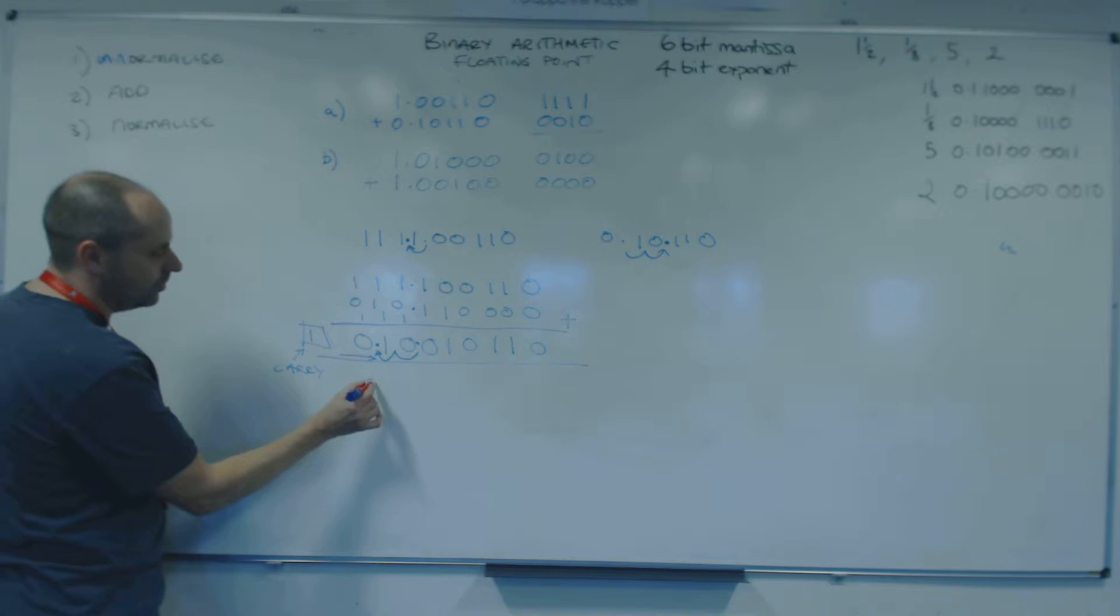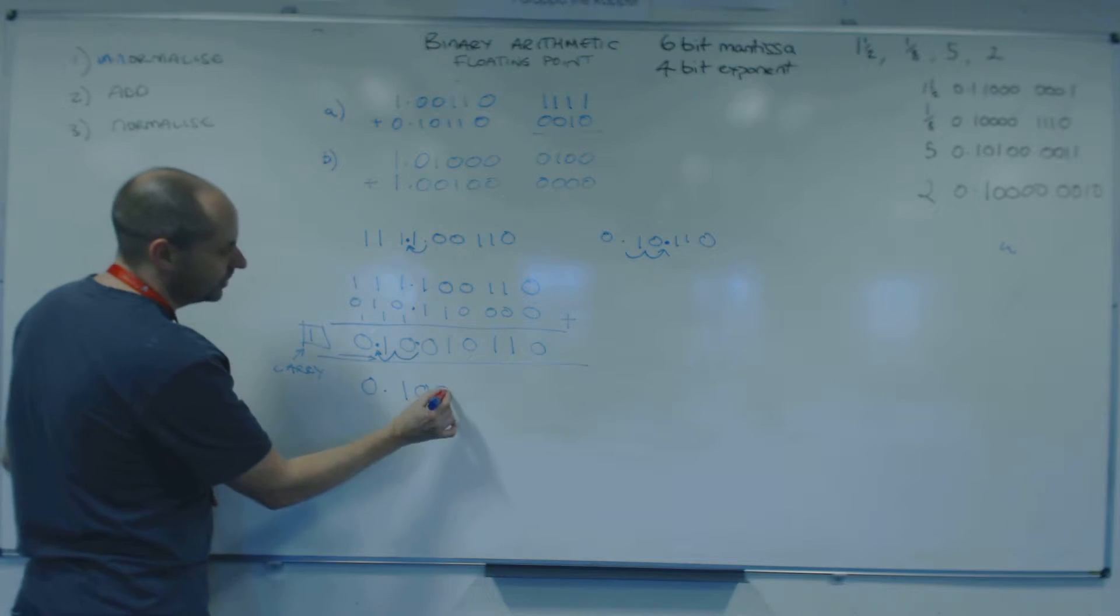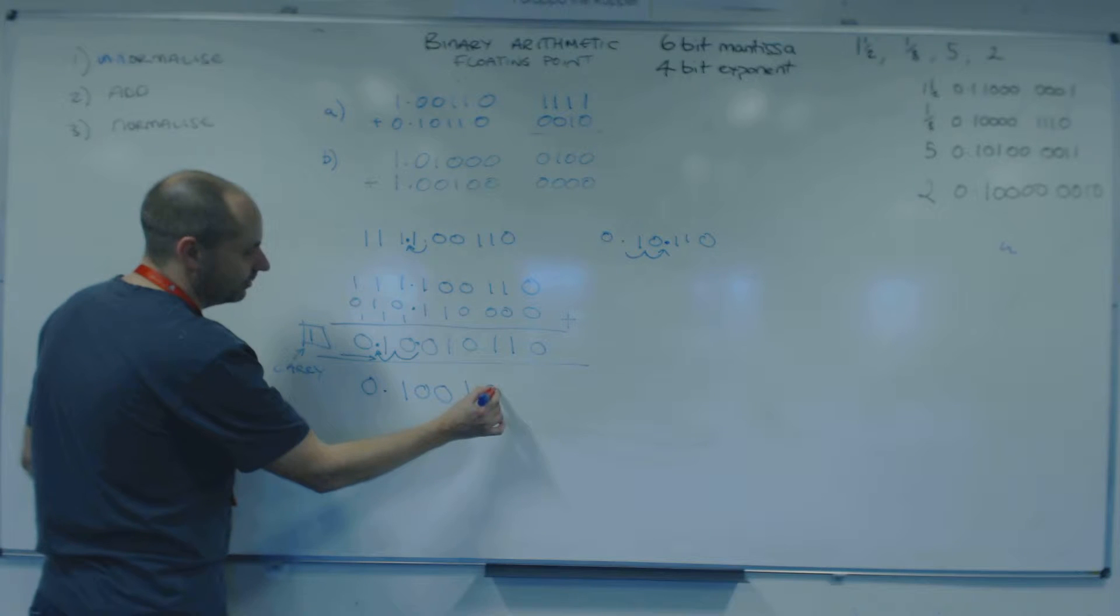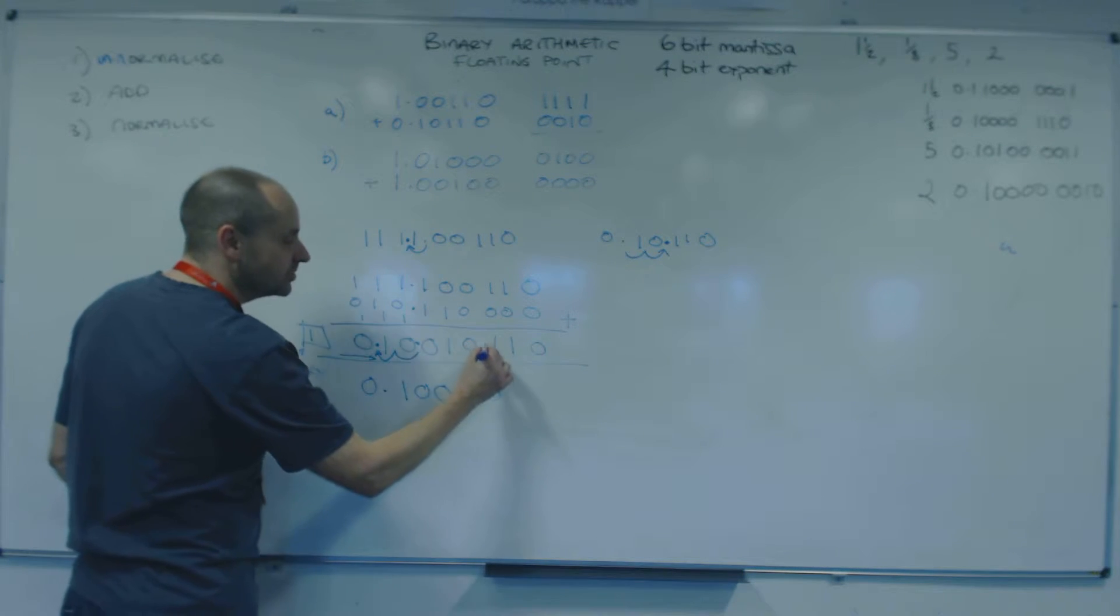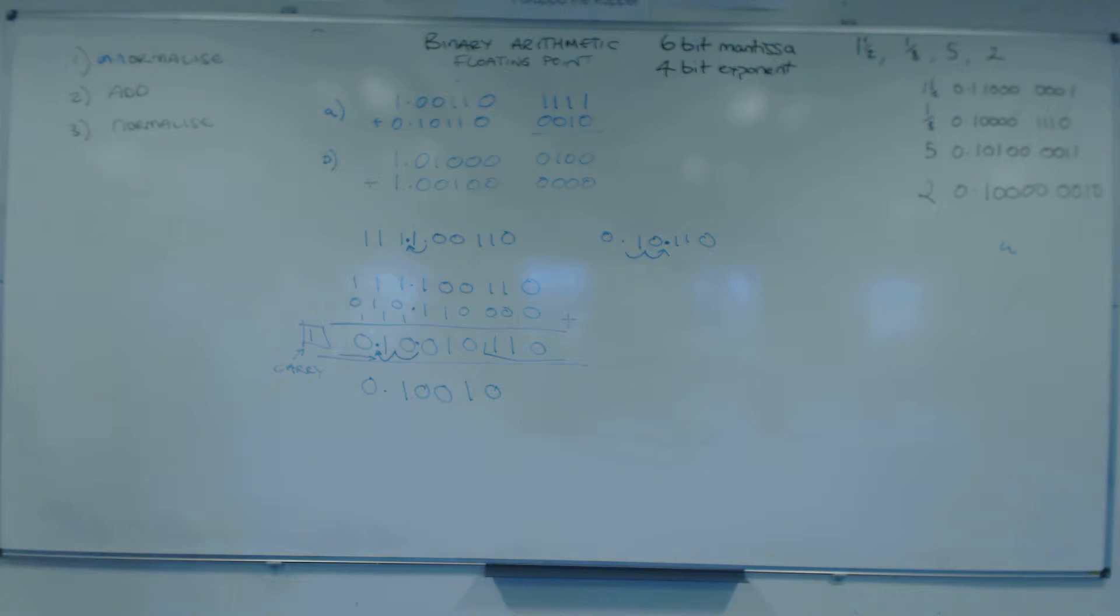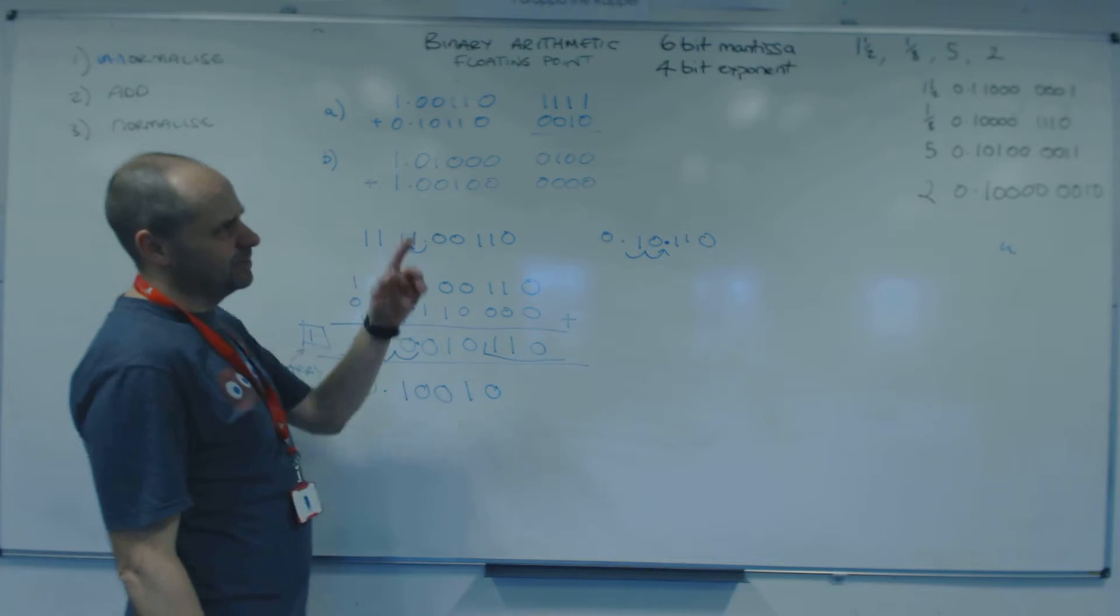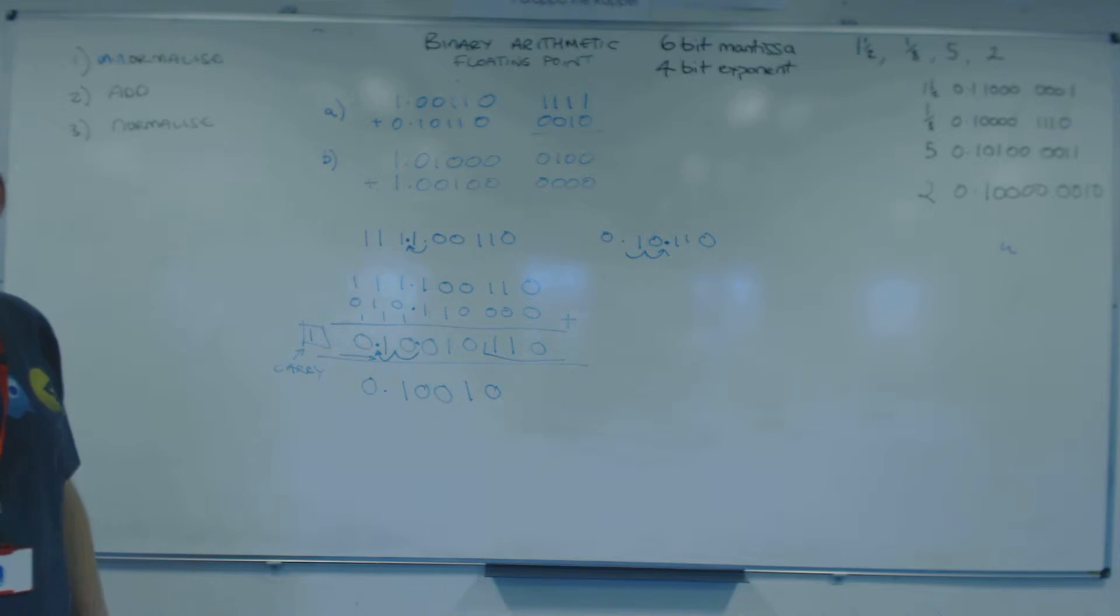So my mantissa is 0.10010. I've only got 6 bits. So I've actually lost 2 bits of precision with this rubbish format. Which is why the proper floating point format for single precision uses 23 bits, 24 if you include the sign bit. For the mantissa. And that's single precision. Double precision uses a lot more. Because 6 bits isn't very good. But you wouldn't want to mess about with 32-bit values in an exam situation.